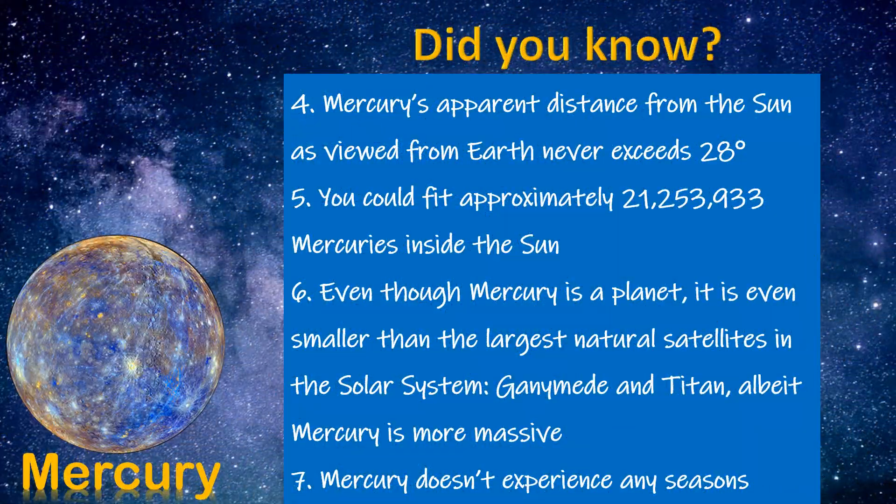Mercury's apparent distance from the sun as seen from the Earth never exceeds 28 degrees. You could fit approximately 21,253,933 Mercuries inside the sun. Even though Mercury is a planet, it is even smaller than the largest natural satellites in the solar system — Ganymede and Titan — although Mercury is more massive. Mercury doesn't experience any seasons.